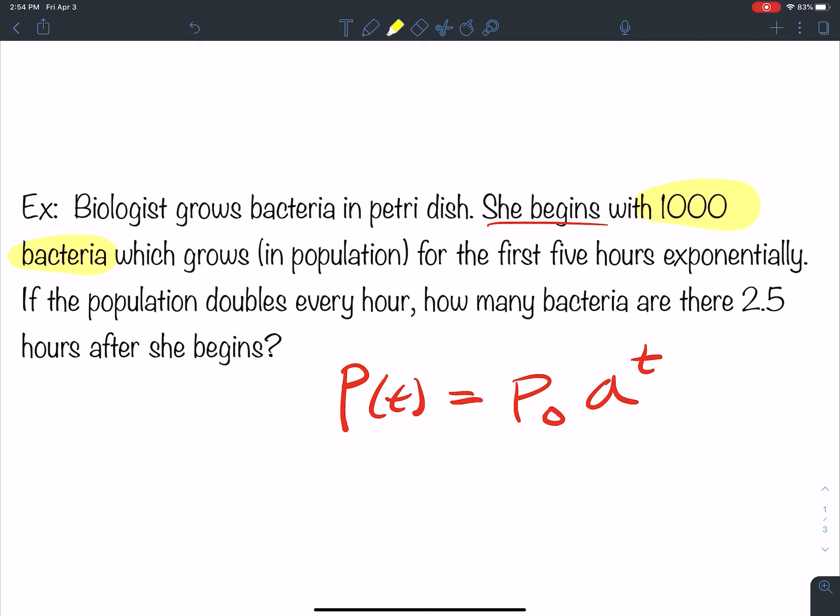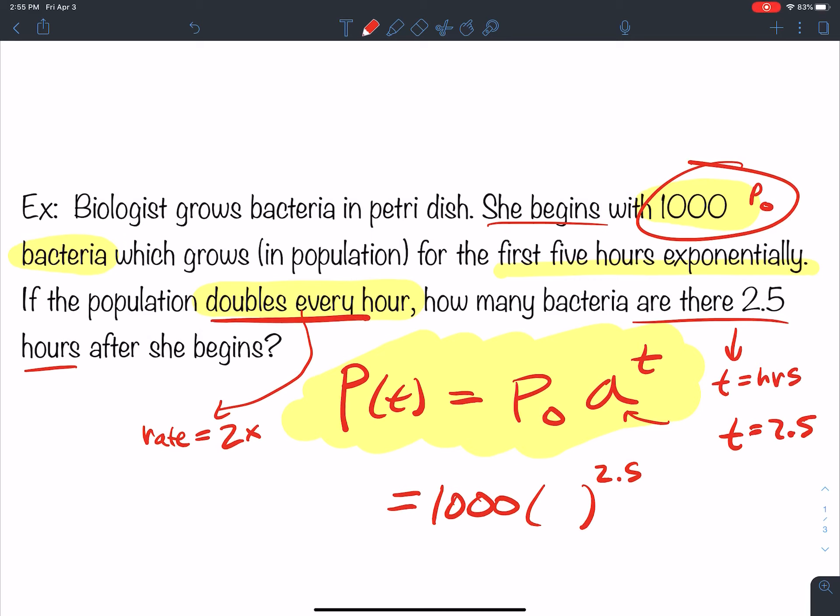So you begin with a thousand. And then in the first five hours, you're told that it grows exponentially. So you know your model is going to be an exponential model for the first five hours. That's what you're told. That's how I know to use this formula right here. If the population doubles every hour, my doubling rate, the rate is double. You're doubling each hour. How many bacteria are there after 2.5 hours? So my time is hours. Here t is equal to 2.5. What else do I have? I've got my initial population. P naught is a thousand. So I have a thousand, and I have something raised to the 2.5. Well, what is my A? My A is the doubling rate. That's the rate I'm doubling each time.